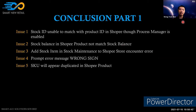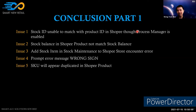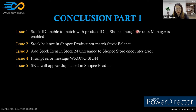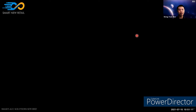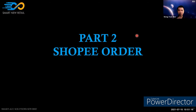Moving on — the session has approximately 88 slides and we are only a quarter through. Please write down any remaining questions and we will address them in the Q&A section, where everyone will be allowed to speak. Now proceeding to Part 2: Shopee Order.